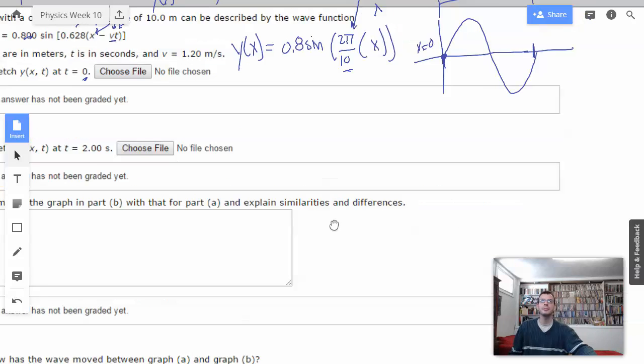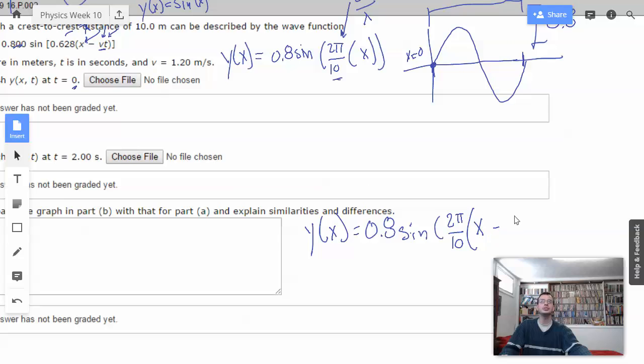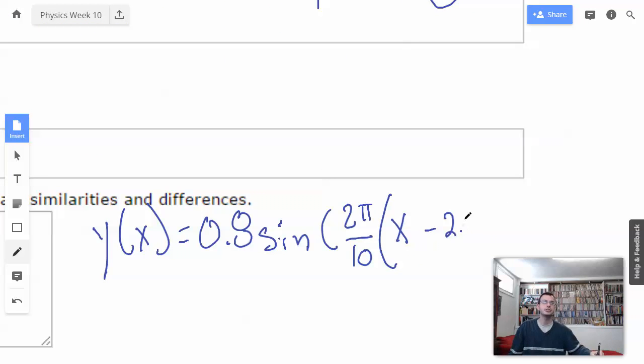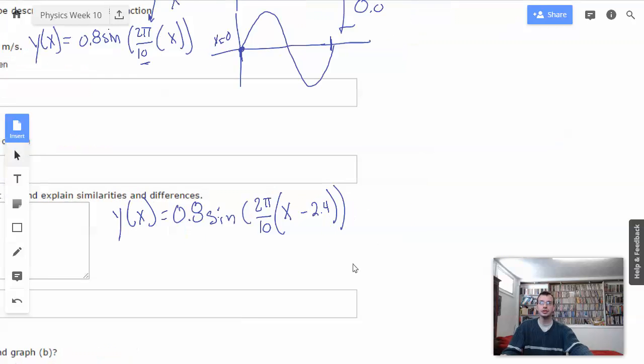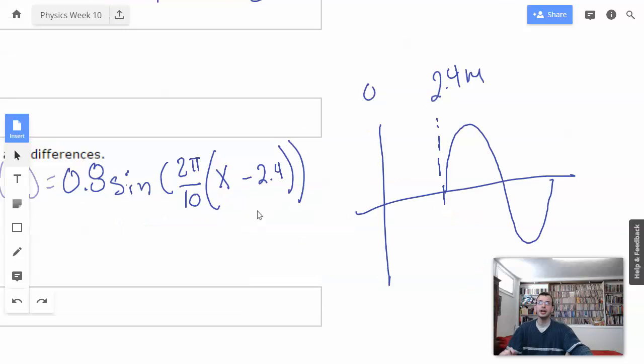All right. Now we're going to say when t equals 2 seconds. So again, I'm going to start by writing out our equation. Y of x, we just have x this time, because we already know what t is. 0.8 sine of 2 pi over 10 times x minus vt. So v is 1.2. 1.2 times 2 is 2.4. So it's going to be 2.4 meters. All right. So what's going to happen then is this is going to move it 2.4 meters to the right. So the same sine wave, except now this is at 2.4 meters and this is 0. And then you can continue it back this way. I'm going to look at Wolfram and see exactly where it intercepts. So the idea here is this moves it to the right.